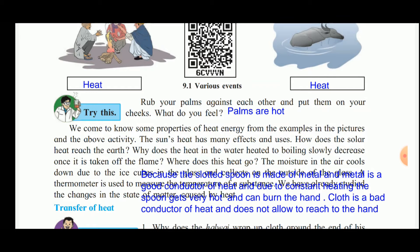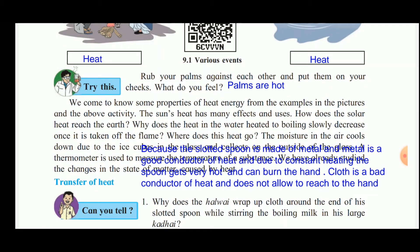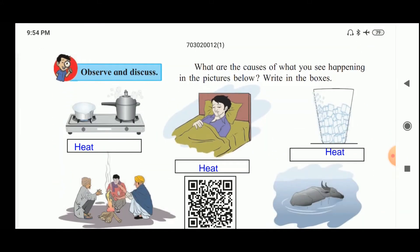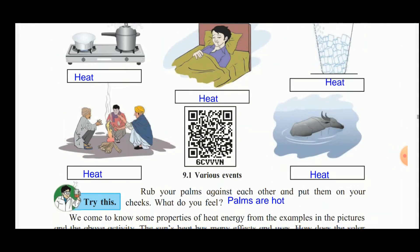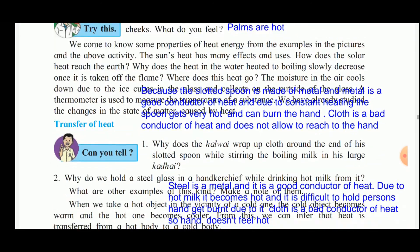The heat in boiling water slowly decreases after being taken off the flame because heat transfer takes place from the water to the surrounding air, bringing the water temperature down gradually. The moisture in the air cools down near ice cubes because the water vapor in the air comes across the cold surface of the glass, its temperature drops, and it condenses back into water droplets on the outer surface of the glass.